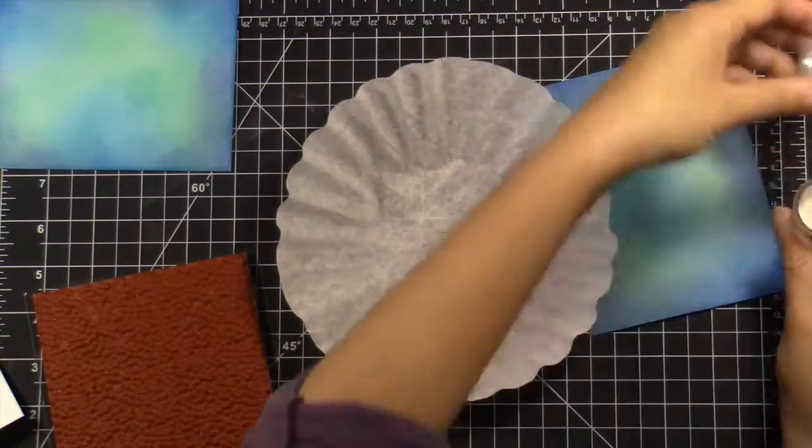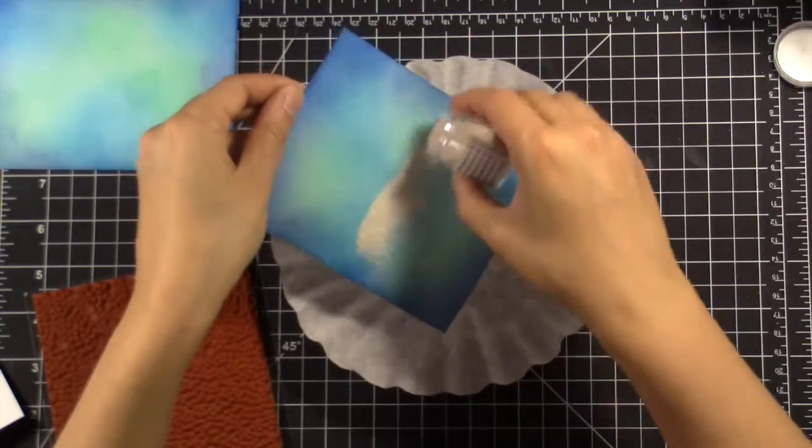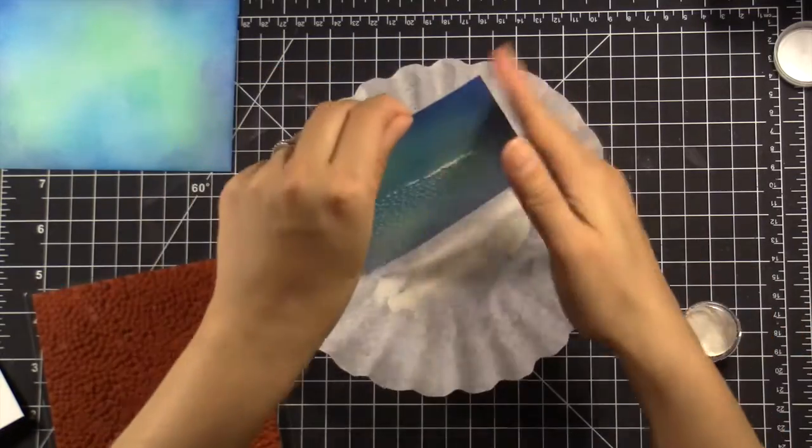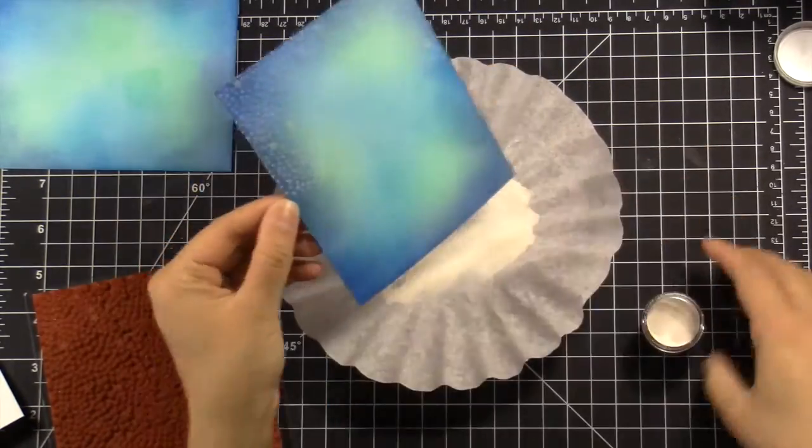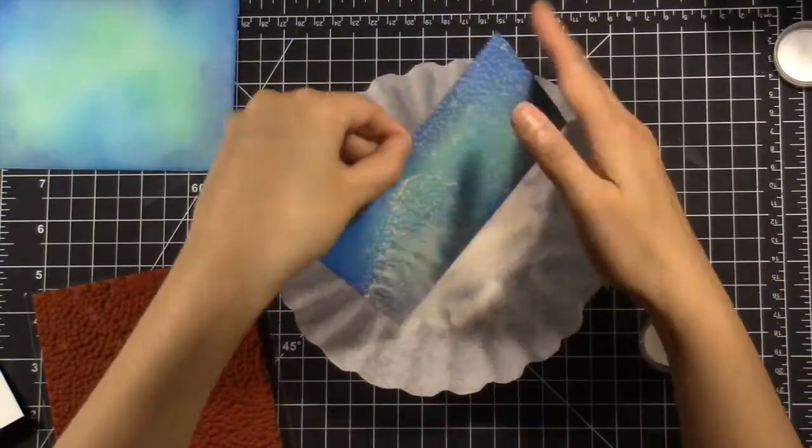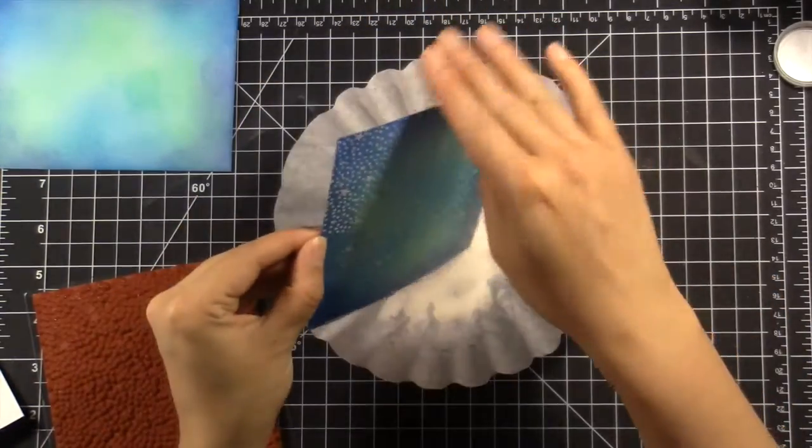And for the first card, I decided to use this Wow Embossing Powder in the color Silver Pearl. And I really love this embossing powder because I feel like it's very classic and just elegant.